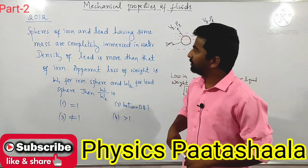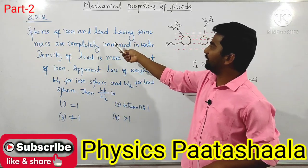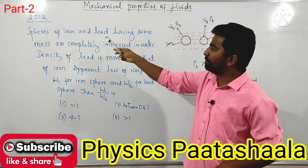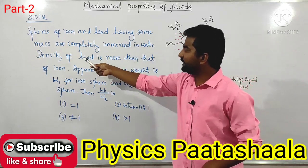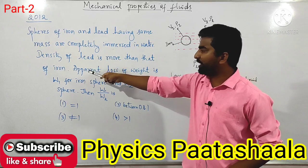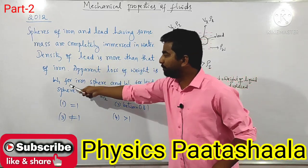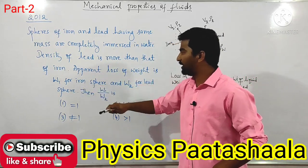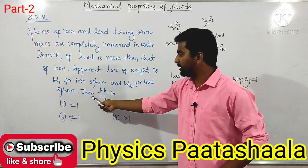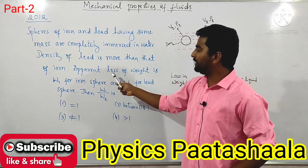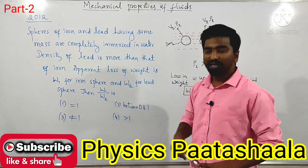We move on to the next question asked in 2012. Spears of iron and lead having same mass are completely immersed in water. Density of lead is more than that of iron. Apparent loss of weight is W1 for the iron spear and W2 for the lead spear. Then what will be the ratio of apparent loss of weight of iron to that of lead?